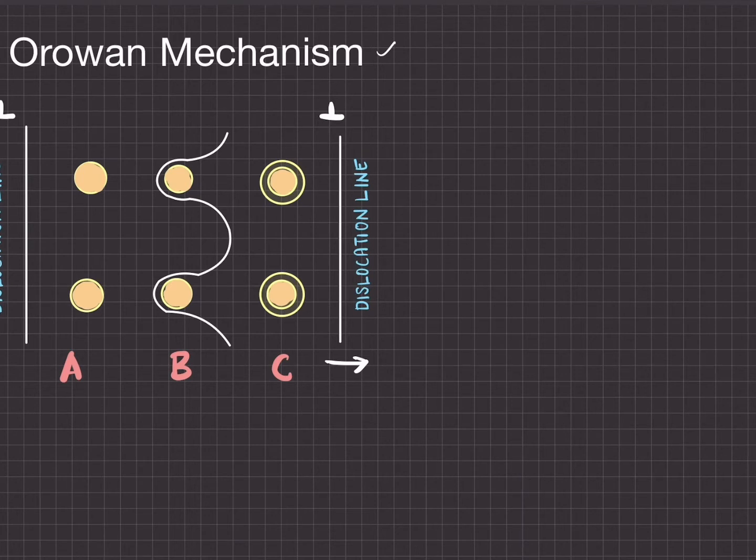This mechanism is shown here in the figure. Here we have the distance, the spacing between the particles, which we can call L. And then we have two particles here with radius R. The distance between these two particles can be written as L minus 2R.